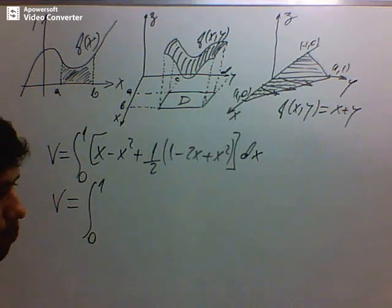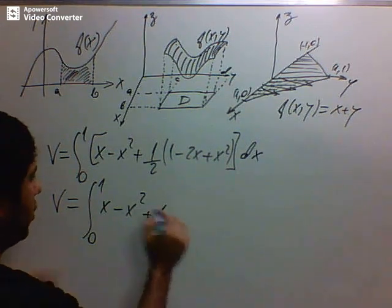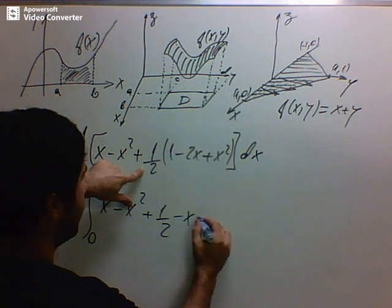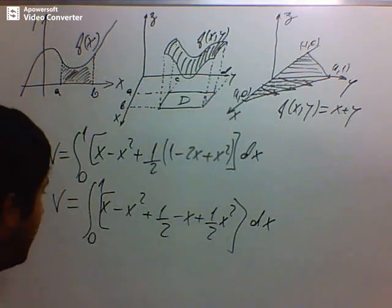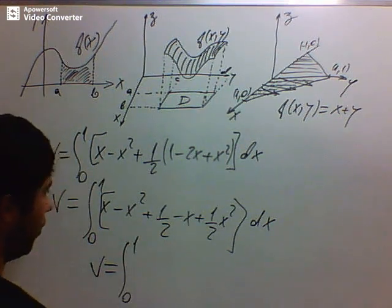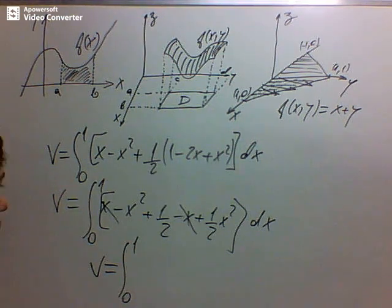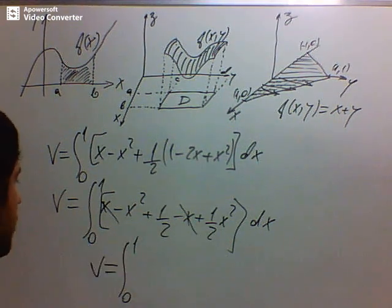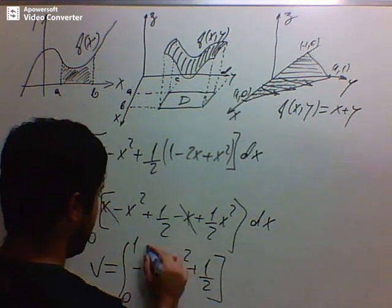Simplifying the integrand from 0 to 1: we have x − x² + (1/2) − x + (1/2)x². The −x and +x cancel, and −x² + (1/2)x² gives −(1/2)x², so we have the integral from 0 to 1 of −(1/2)x² + (1/2) dx. Factoring out 1/2, this becomes (1/2) times the integral from 0 to 1 of (−x² + 1) dx.